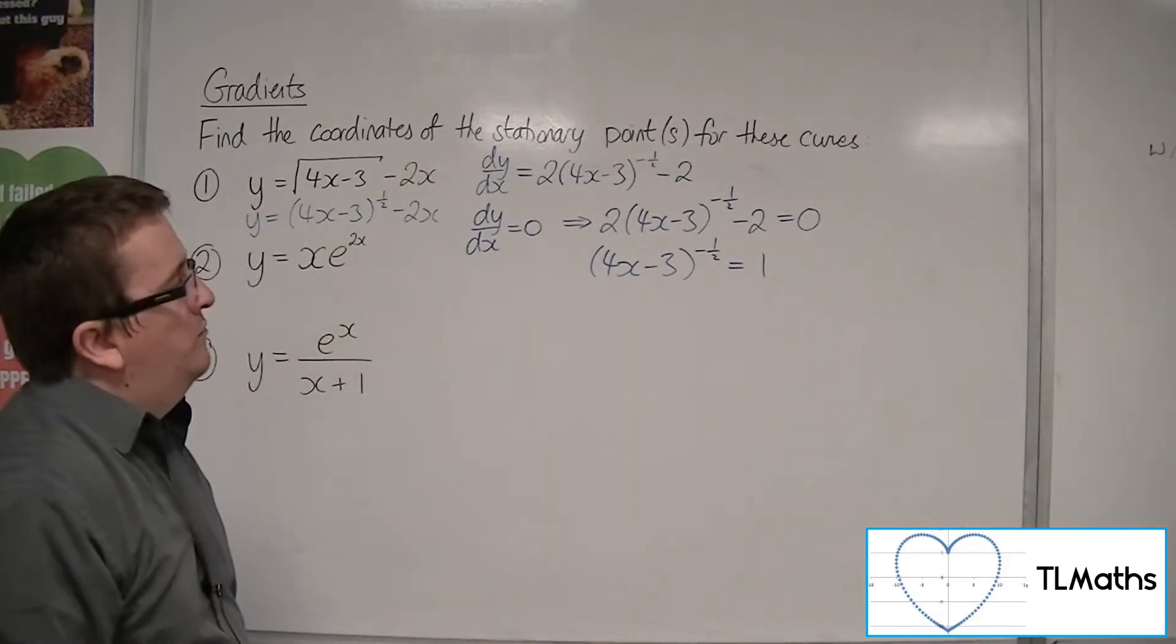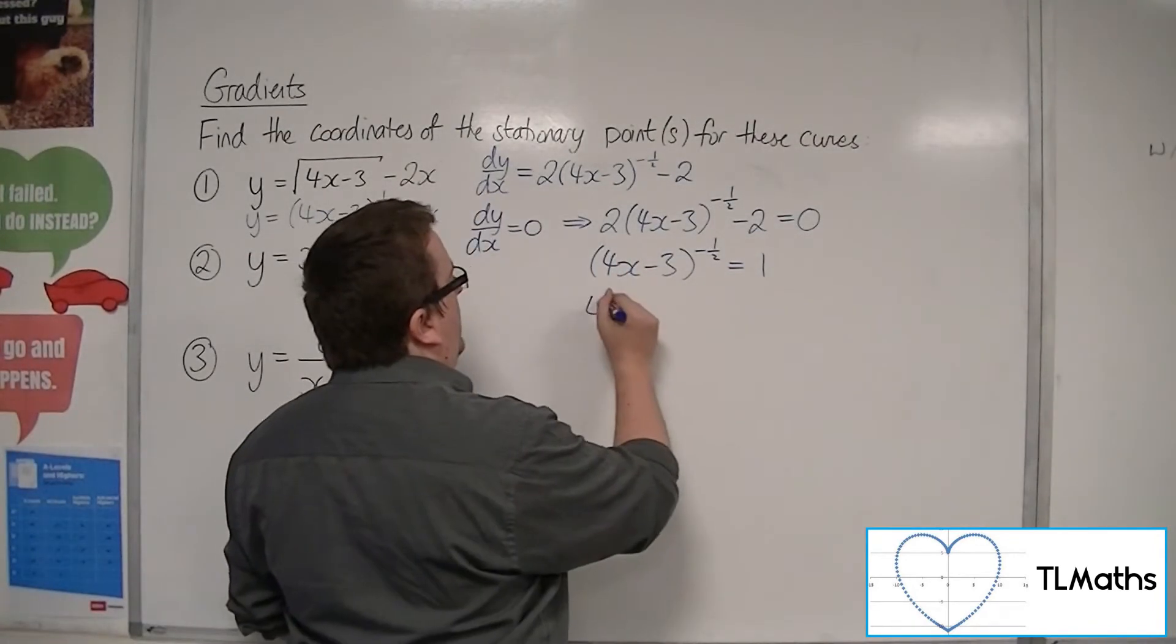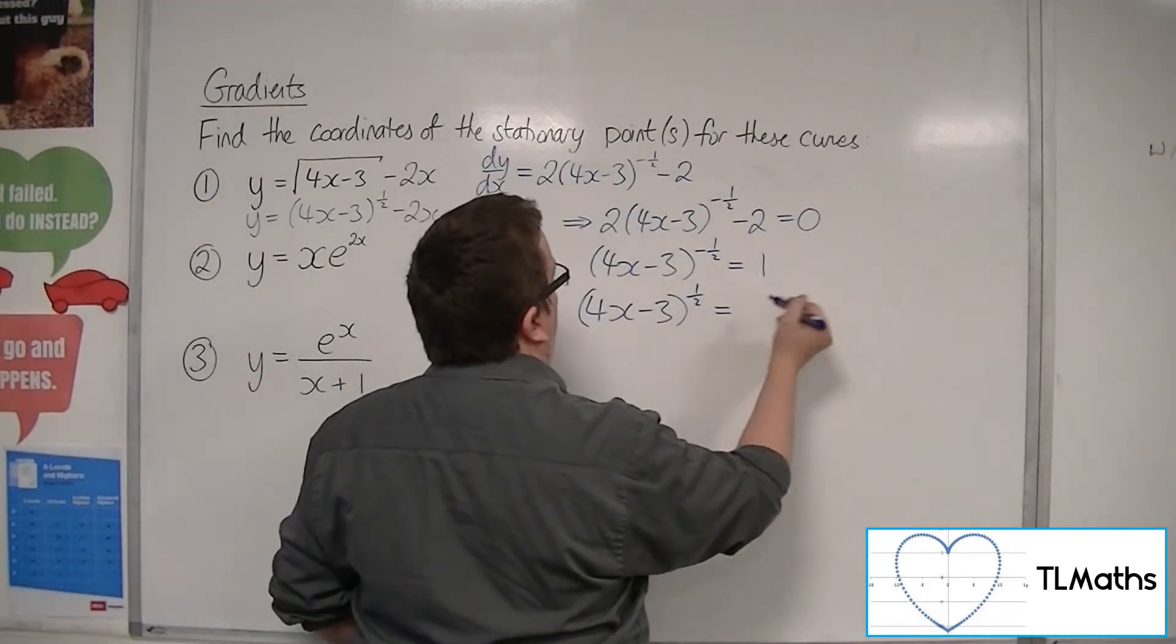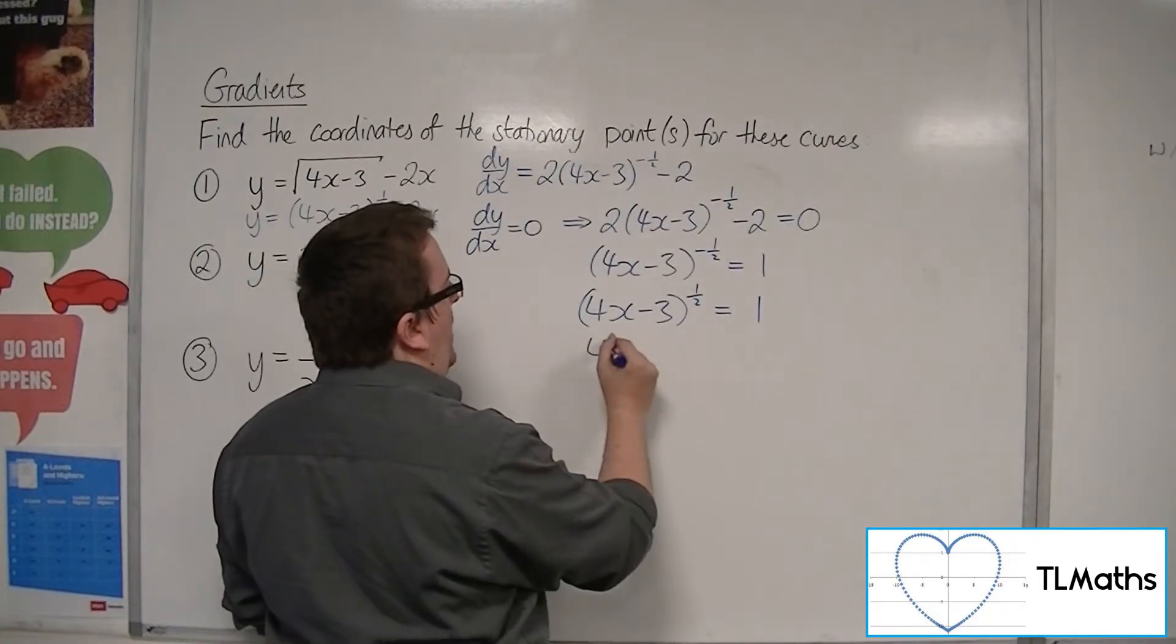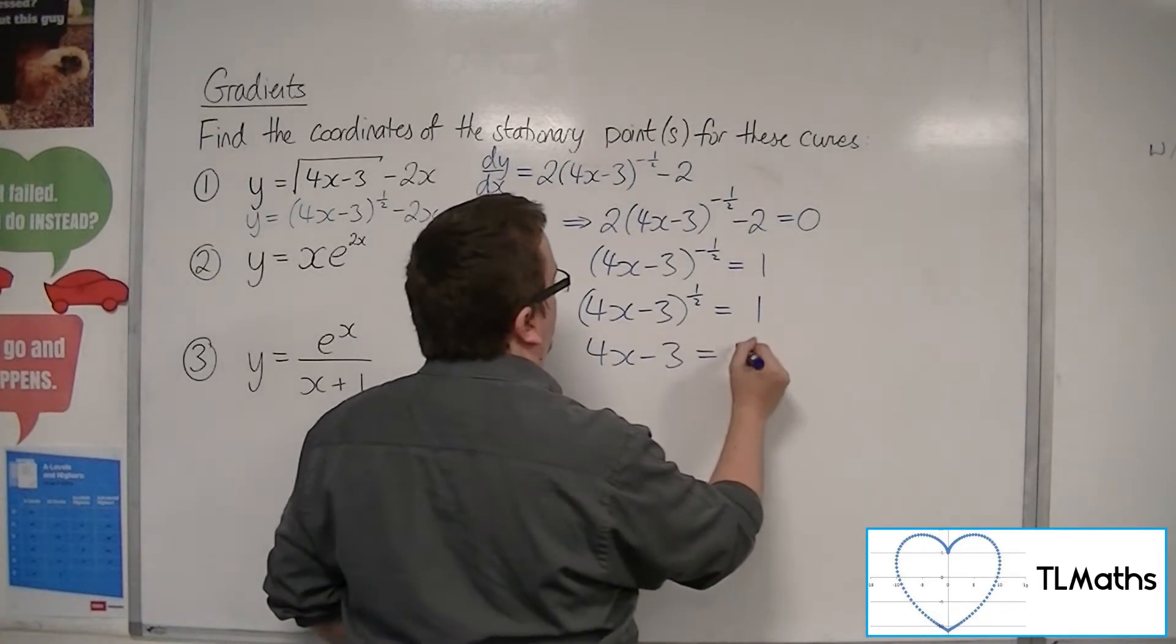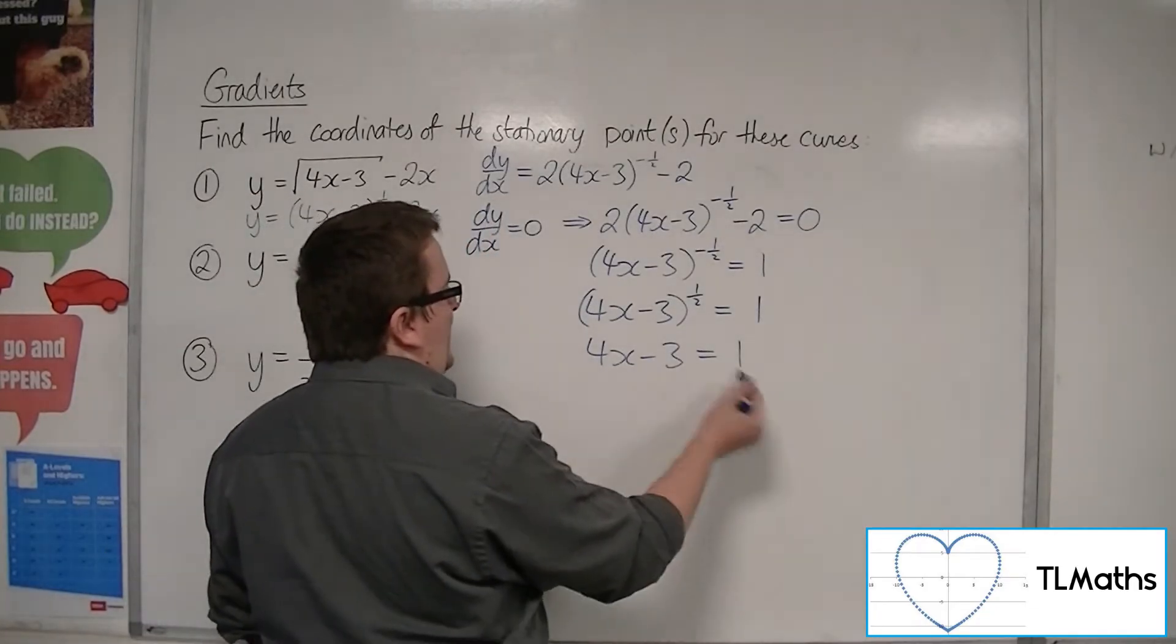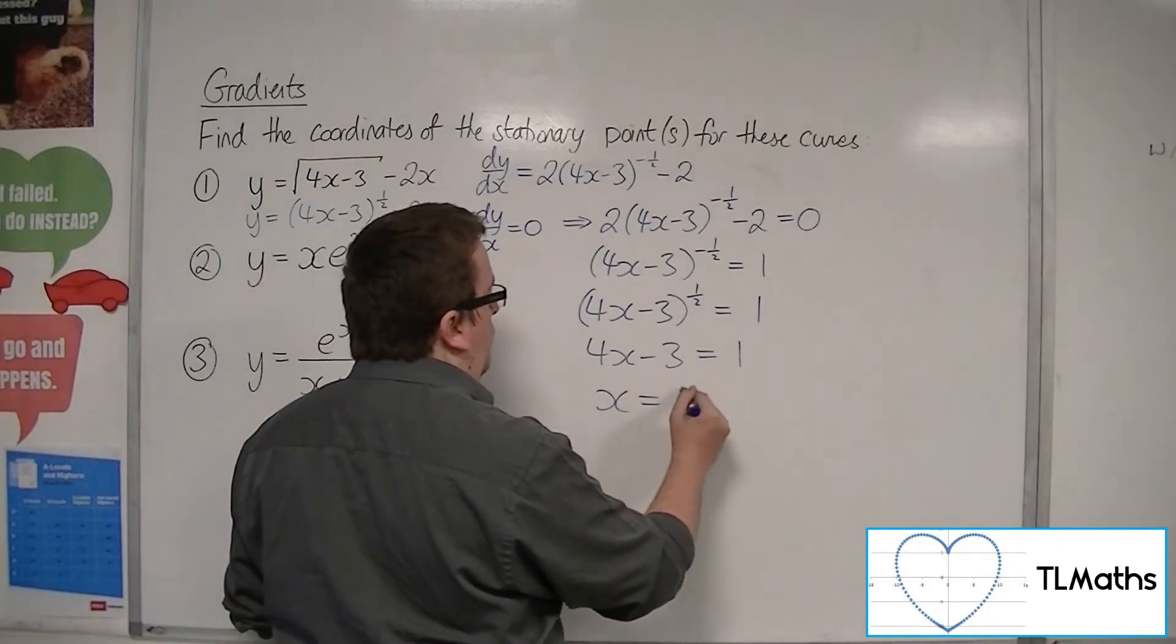At this point, if I use the reciprocal of both sides, so that means that (4x - 3)^(1/2) is the reciprocal of 1, which is just 1. Now I can square both sides, and I get 4x - 3 = 1. So adding 3 to both sides, I get 4x = 4, dividing both sides by 4, I get x = 1.